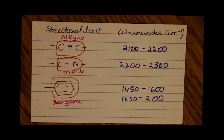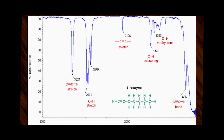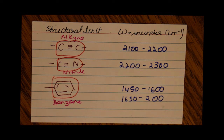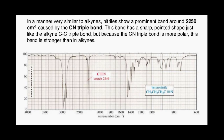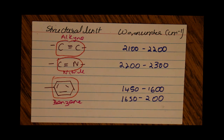For a carbon triple bonded to a nitrogen, the peak shows up between 2200 and 2300, as seen here. For a benzene aromatic ring, the peaks show up between 1450 and 1600 inverse centimeters.